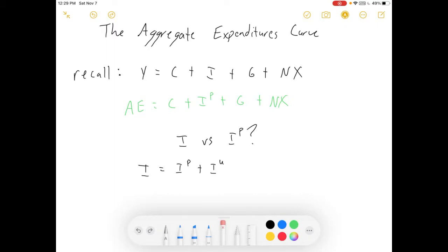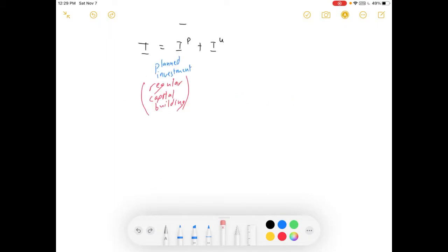So part of our investment we planned on and part of it we didn't. Planned investment is like regular capital building and expanding your business. And unplanned investment usually has to do with unintentional inventory changes, where if you produce your product at a different rate than people are buying it.